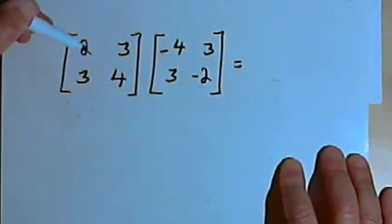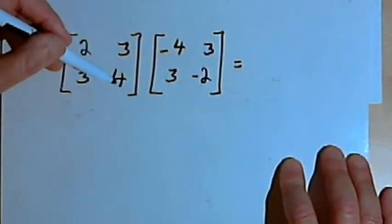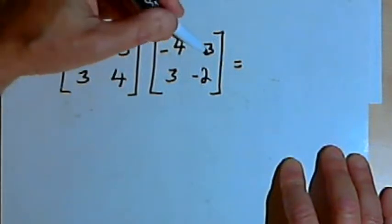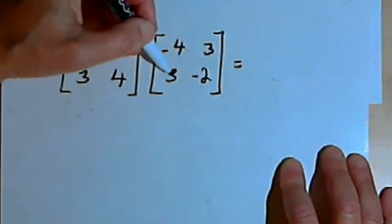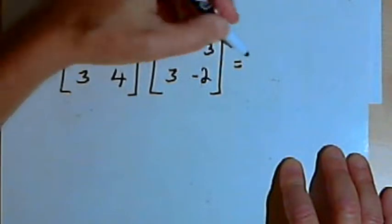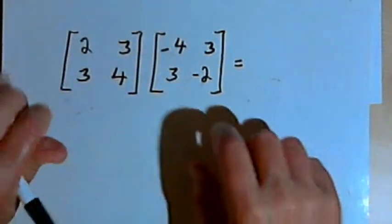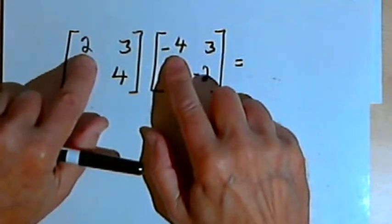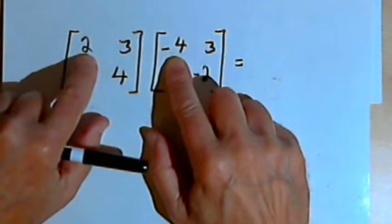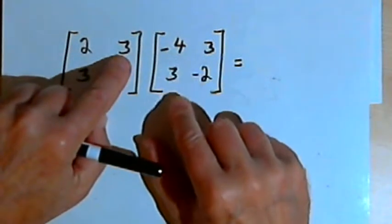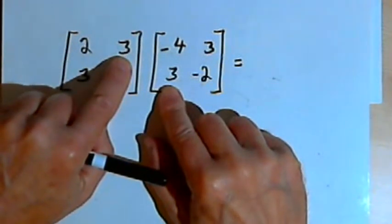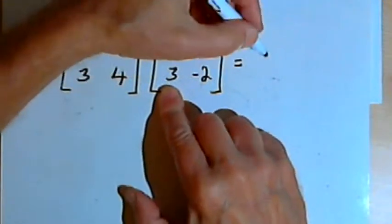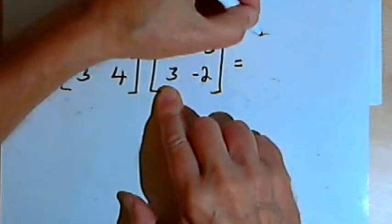The first matrix is 2, 3, 3, 4. The second matrix is negative 4, 3, 3, and negative 2. To multiply them, I'll multiply 2 times negative 4 is negative 8, and then 3 times 3 is positive 9. Negative 8 and positive 9 add up to 1.